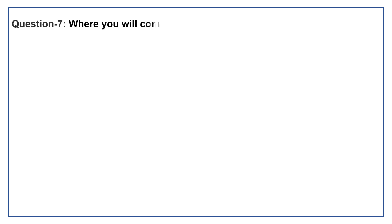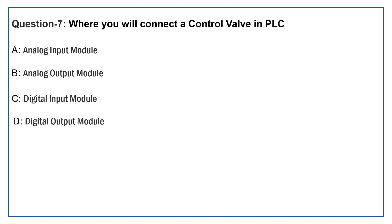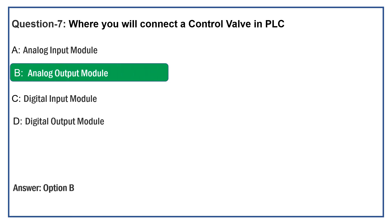Where will you connect the control valve in PLC? Option A: Analog Input Module. Option B: Analog Output Module. Option C: Digital Input Module. Option D: Digital Output Module. The right answer is Option B: Analog Output Module. Yes, a control valve has to be connected at the Analog Output Module of a PLC.